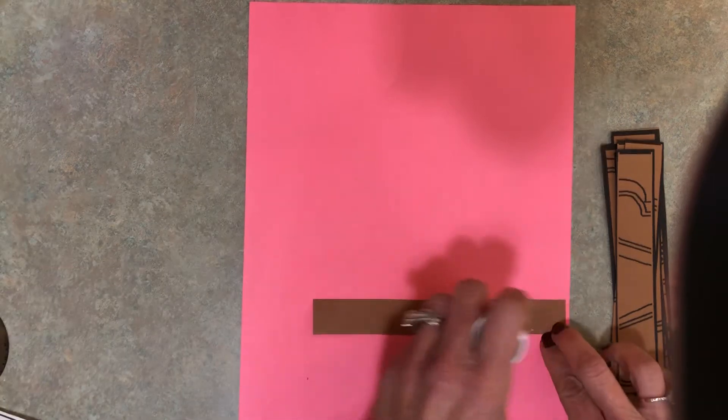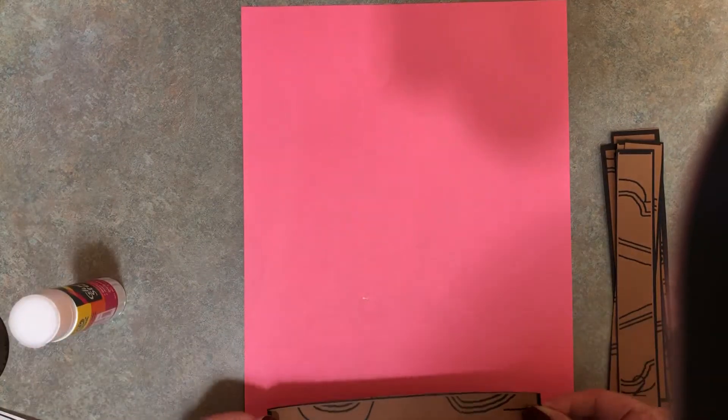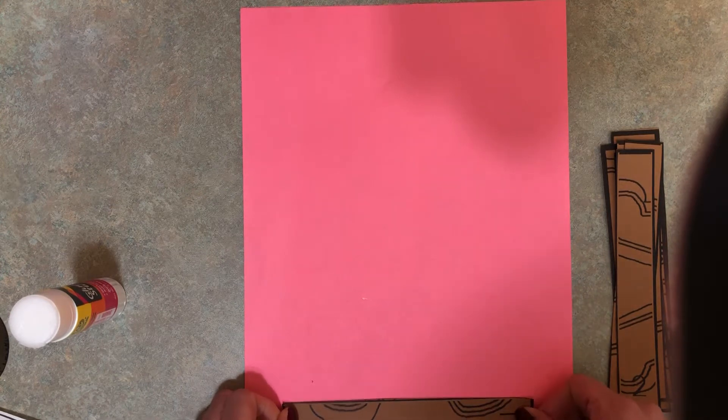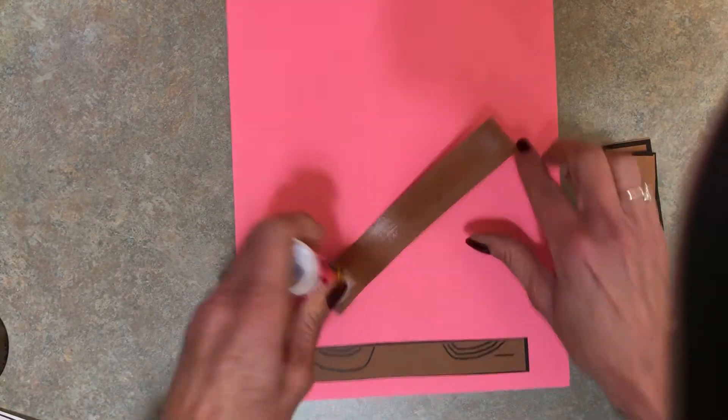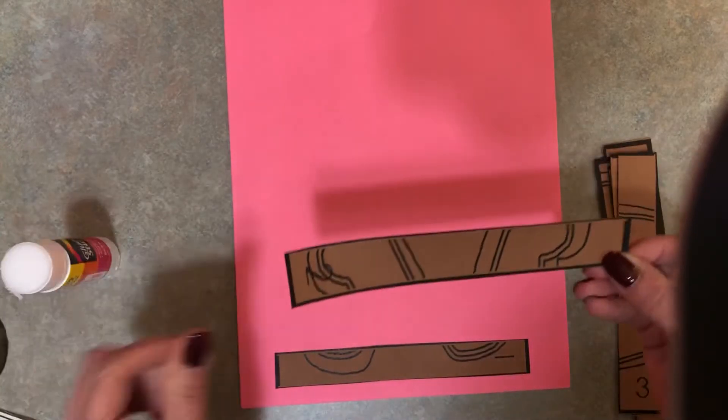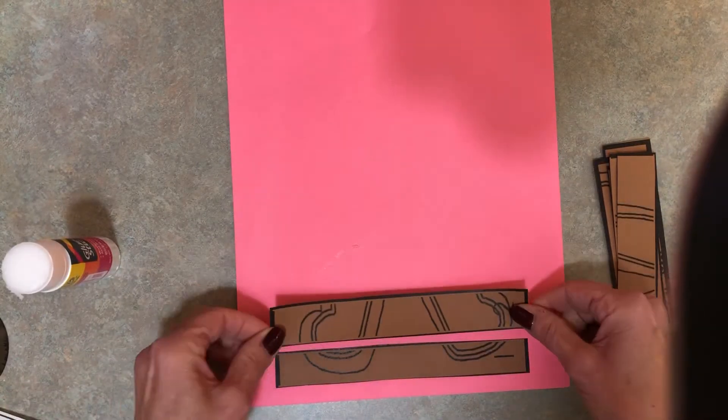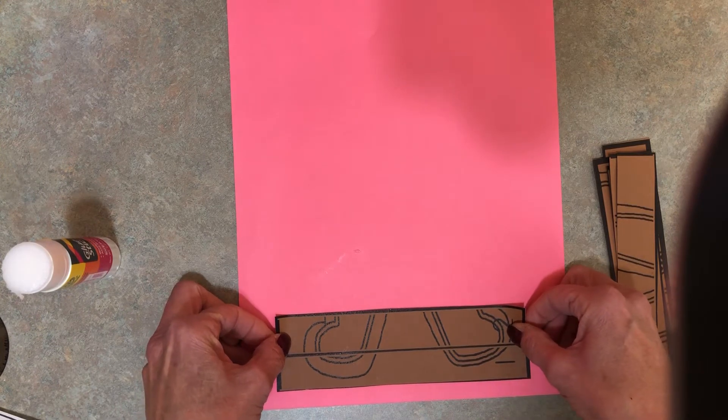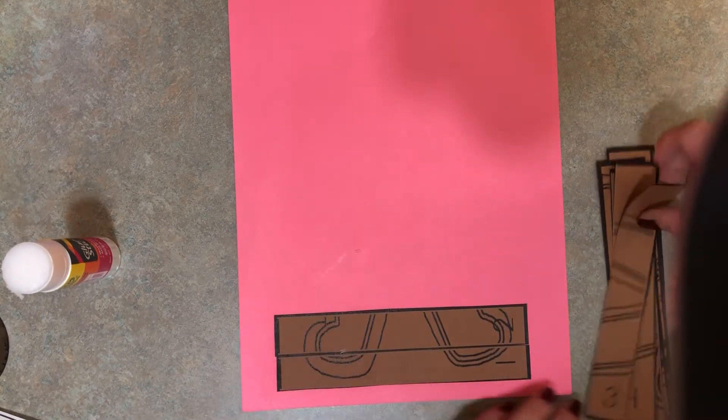Get your glue stick and you're going to place this at the bottom of the pink construction paper like this. Okay, then you're going to get number two next and you're going to line that up. Make sure all the numbers are on the same side, so you're going to line it up and hold it close together, and slowly you will notice you're going to put your gingerbread man together.